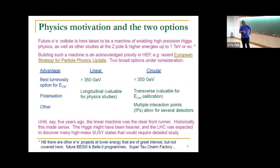This was a conclusion of the recent European strategy update. There are two broad options: linear and circular with different strengths. For luminosity, linear machines give best value for money at 350 GeV or so, but below that a synchrotron is your best bet. Linear machines have longitudinal polarization valuable for physics studies, but synchrotrons have transverse polarization absolutely vital for energy calibration. Circular machines offer multiple interaction points for several experiments concurrently.